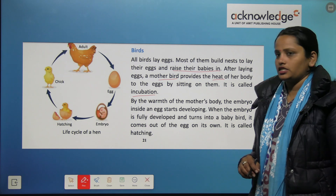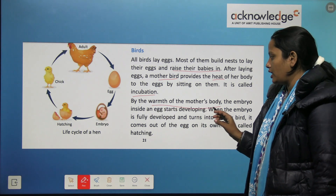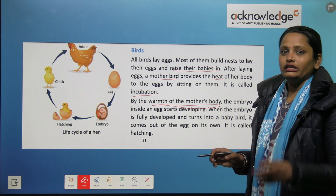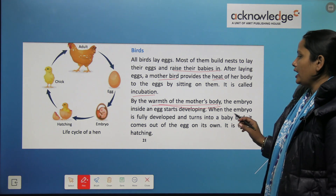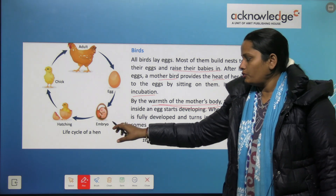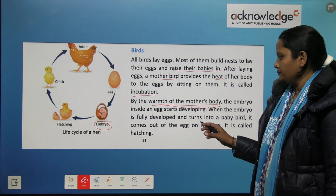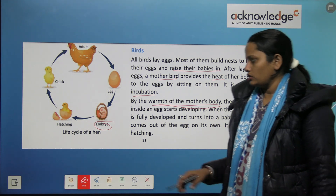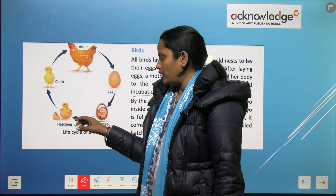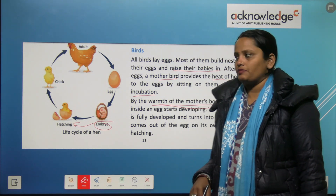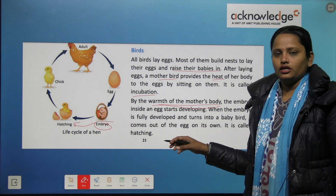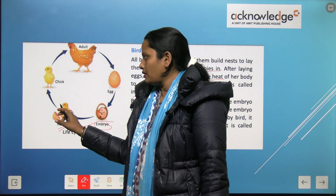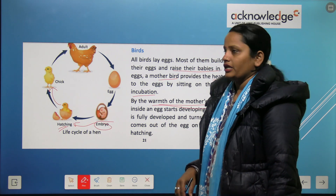By the warmth of the mother's body, the embryo inside the egg starts developing. When the embryo is fully developed, it turns into a baby bird and comes out of the egg on its own. This is called hatching. After hatching, the chick is ready.